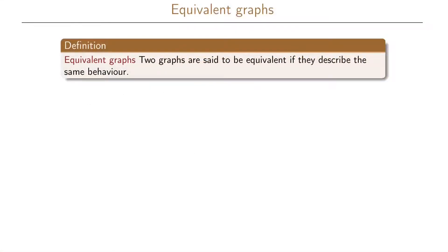We will now start looking at how we can reduce the number of states such that we have as few states as possible in our state transition graph. A definition that we want to have here is that of equivalent graphs. Two graphs are said to be equivalent if they describe the same behavior.